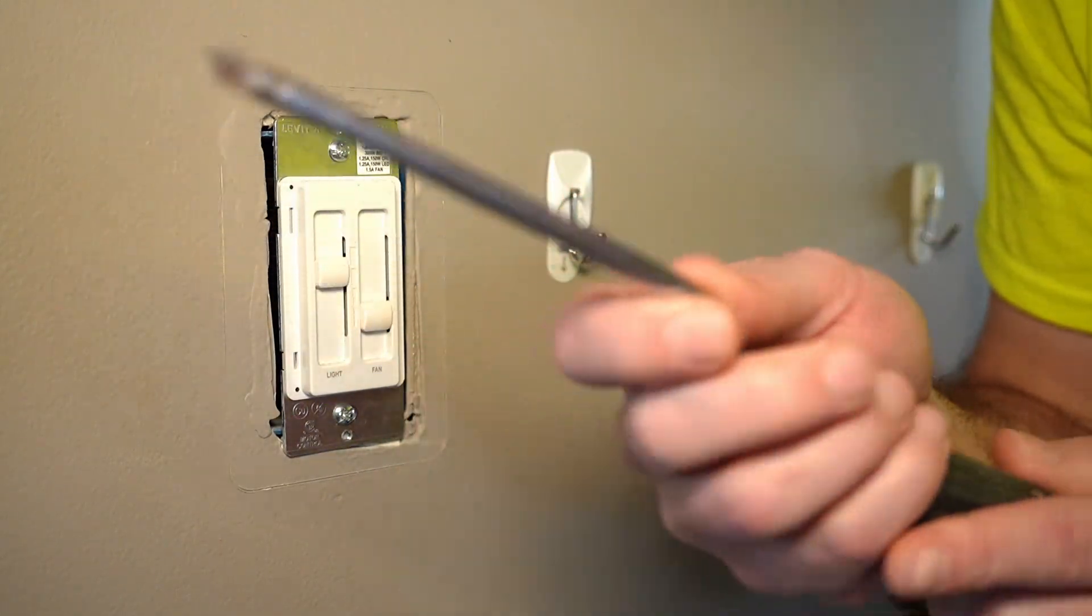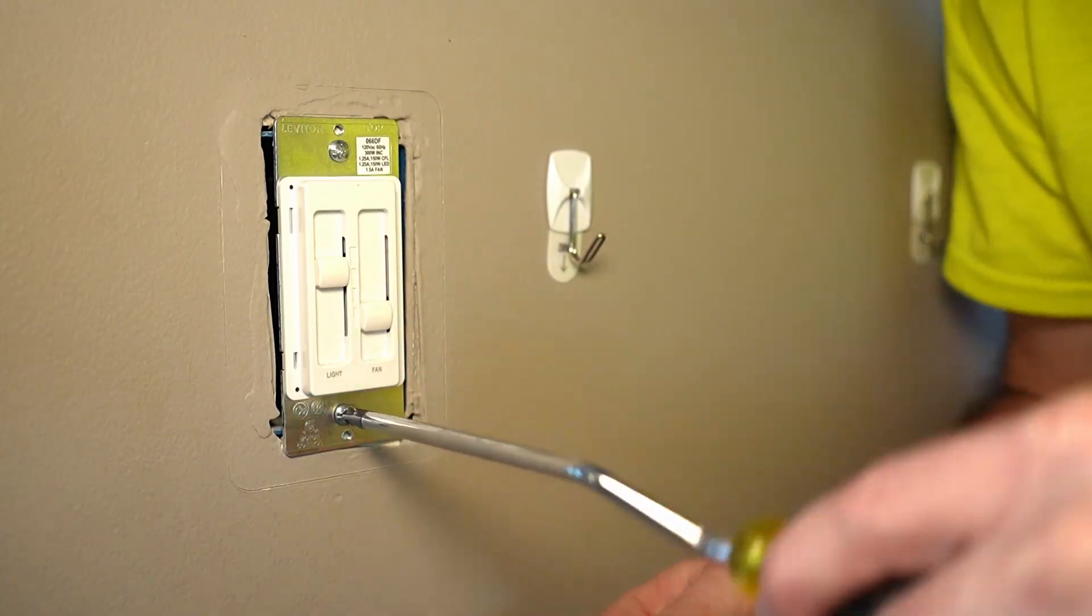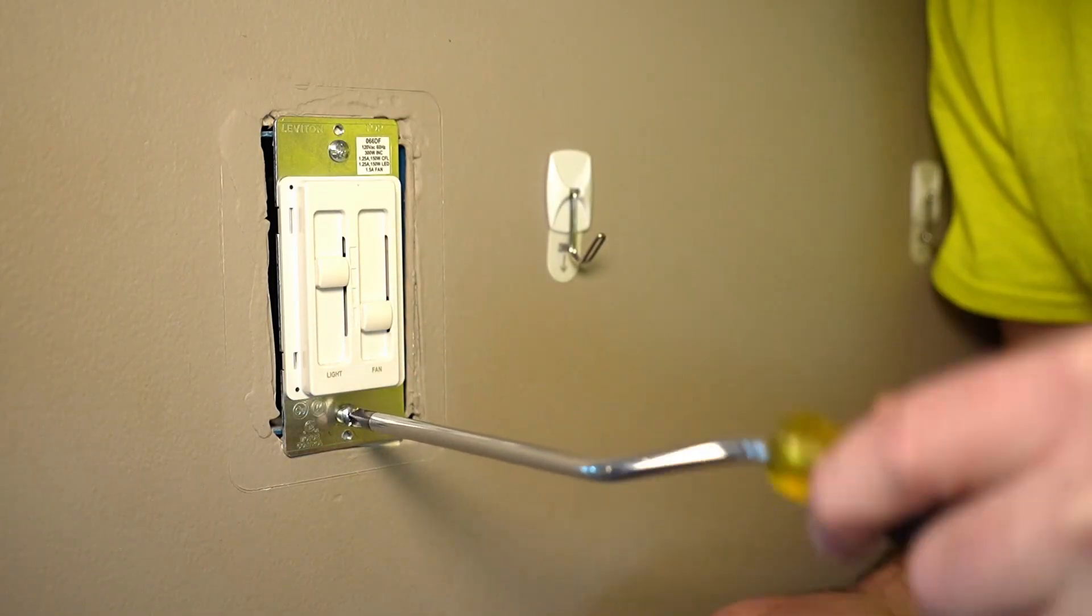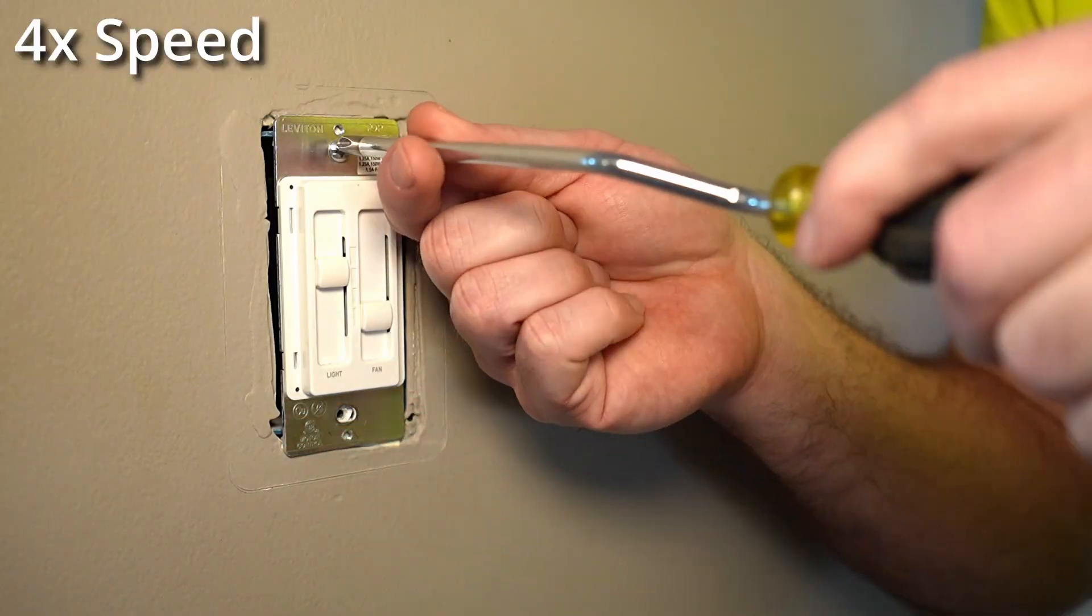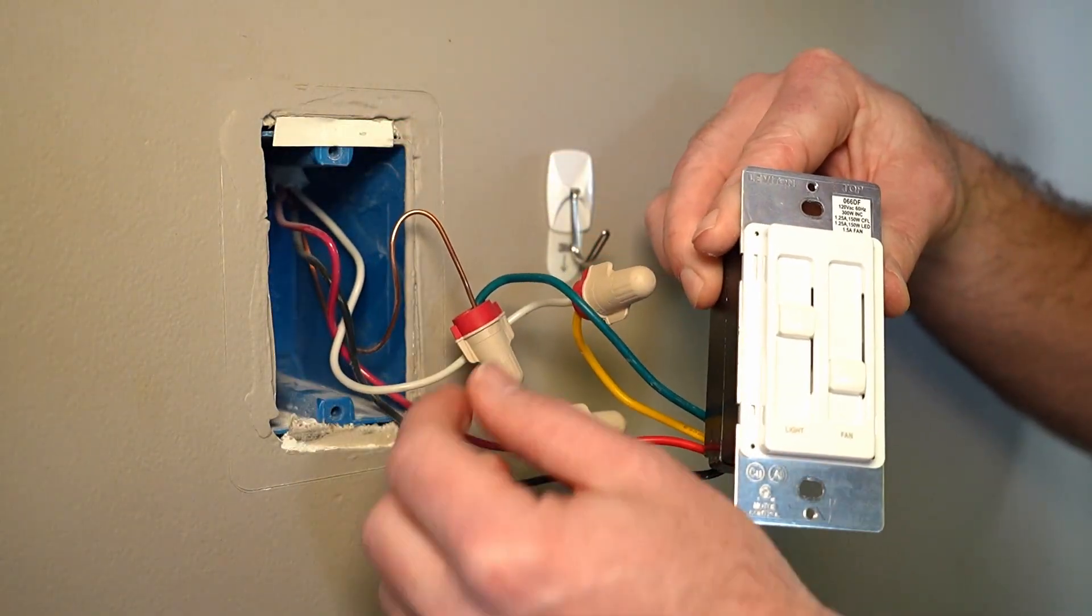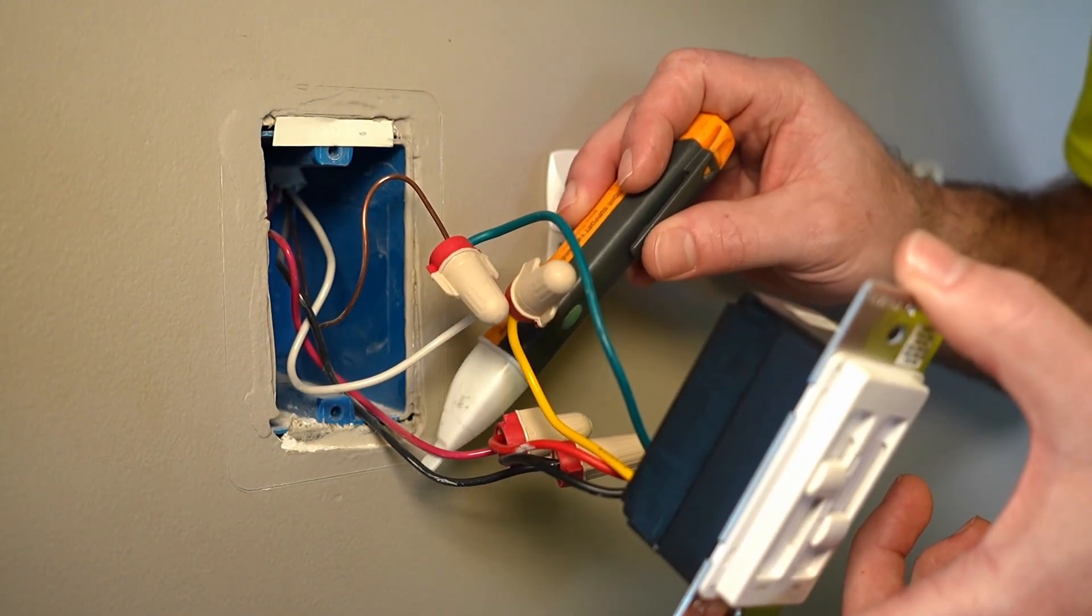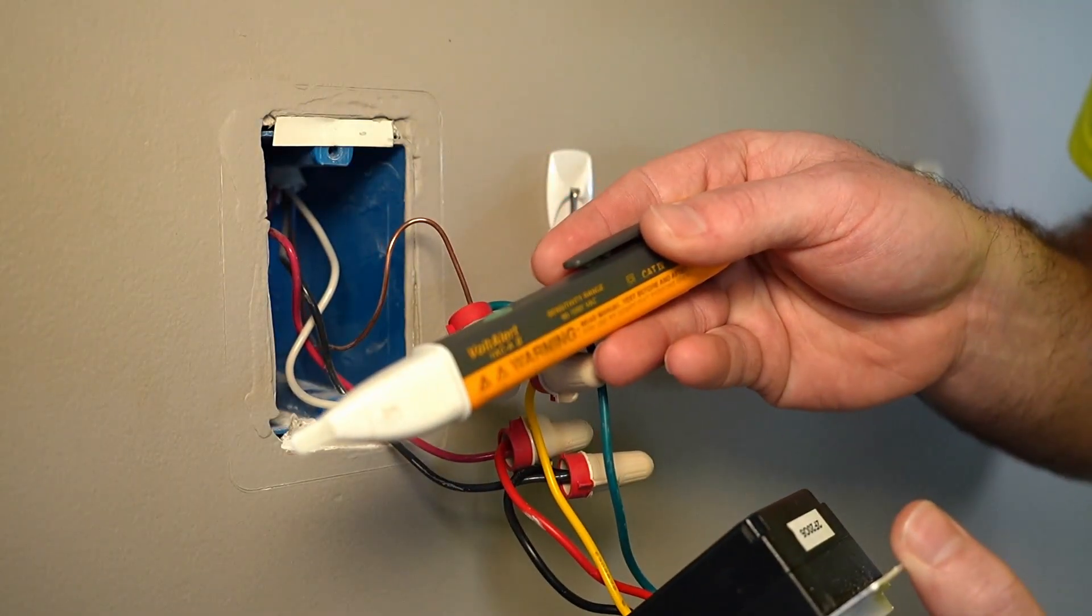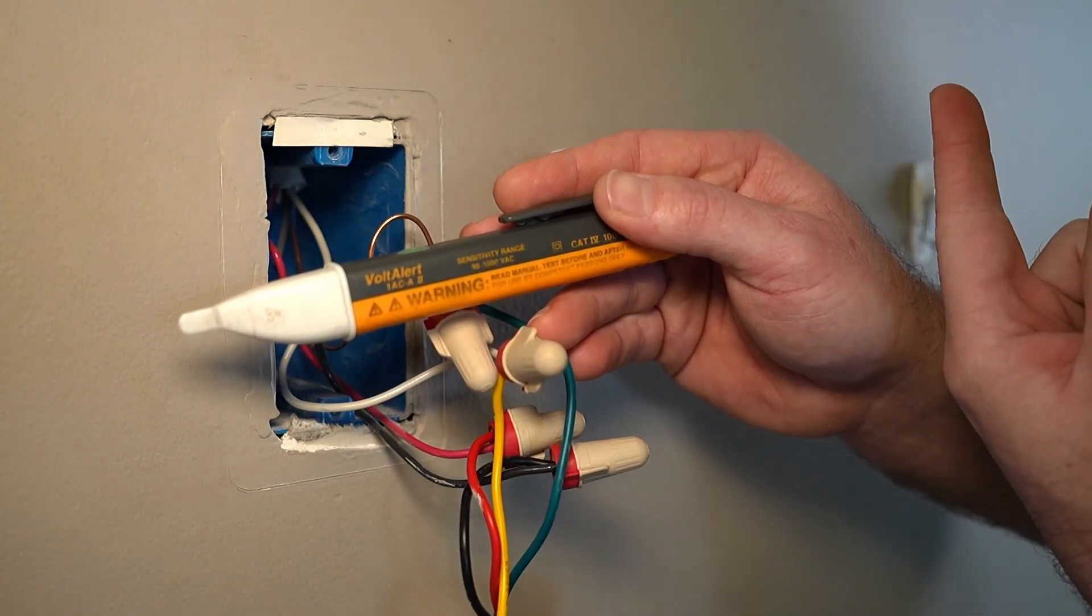And you can actually see this indent that's been put into the paint because of this cover. I'm actually going to use my Phillips speedy screwdriver and zip these out really fast. Yes, you could absolutely use a drill for this situation as well. And that would work just fine. And here we go. Here's all the wires that are going to be involved in this changeout. I always like to just double check that my wires are dead. I am using a non-contact voltage tester. I've actually got a video about these.